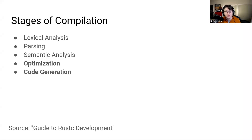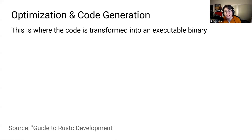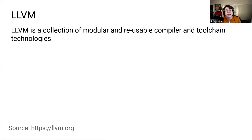But for now, let's finish up the stages of compilation and focus on the last two: optimization and code generation. These stages are where the code is transformed into an executable binary. In the Rust compiler, we use LLVM to do this for us. LLVM is a commonly used collection of modular and reusable compiler and toolchain technologies. The Rust compiler uses it to further optimize the code and generate the machine code to run it.